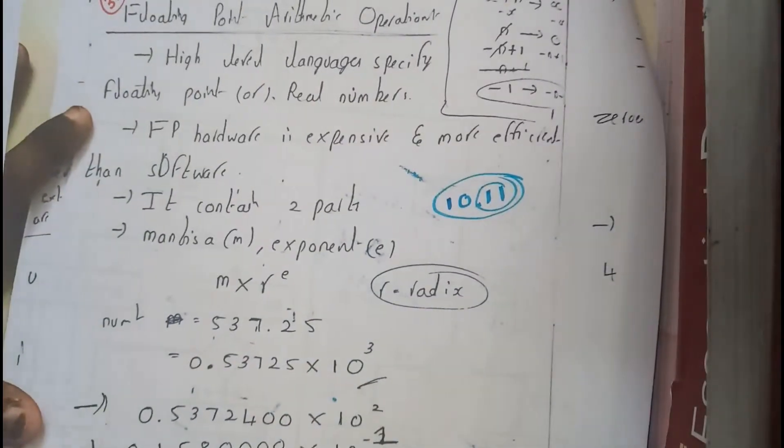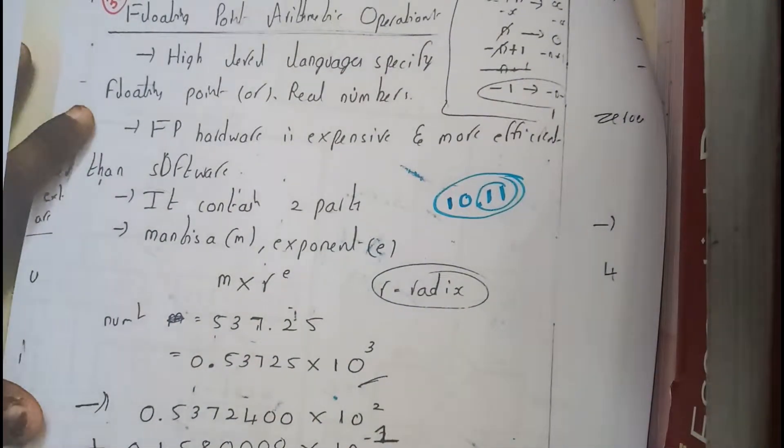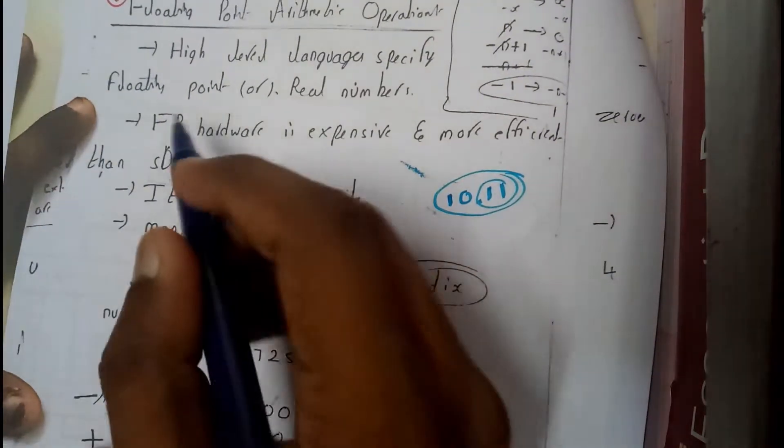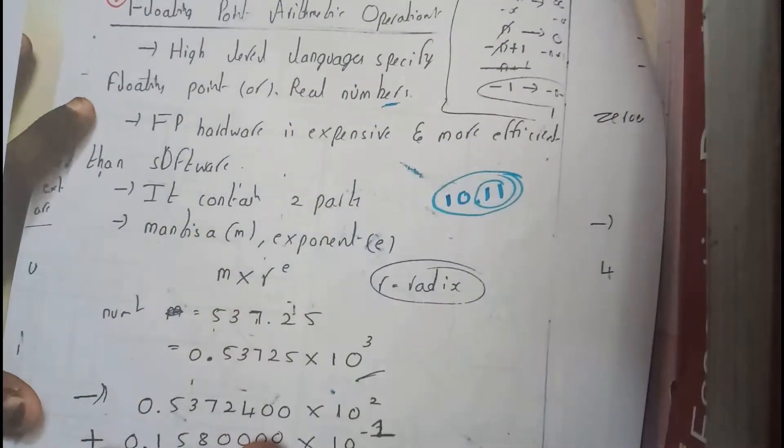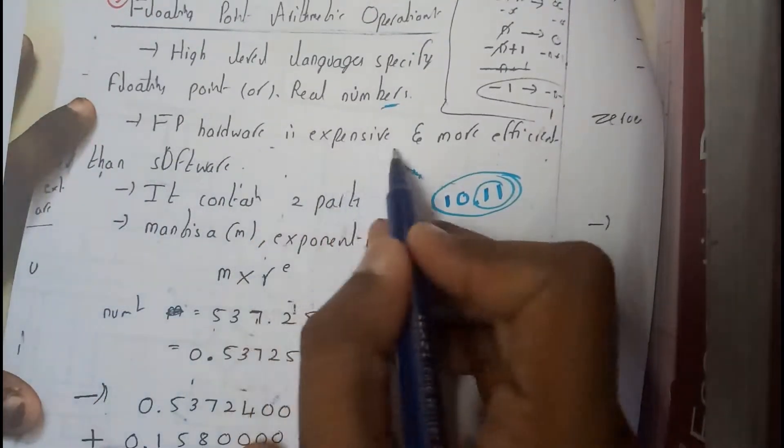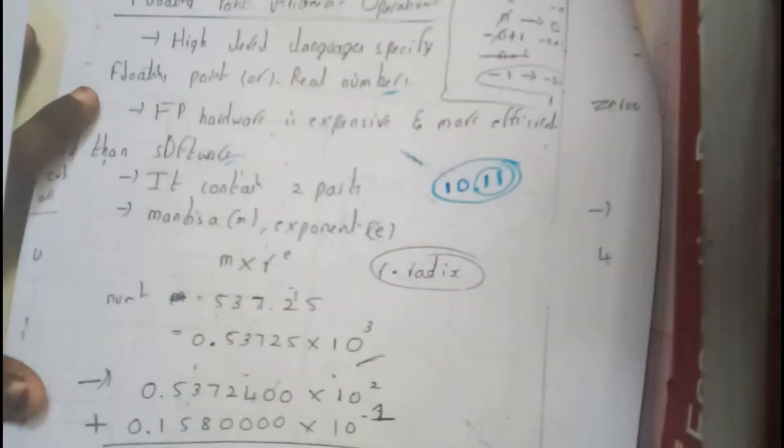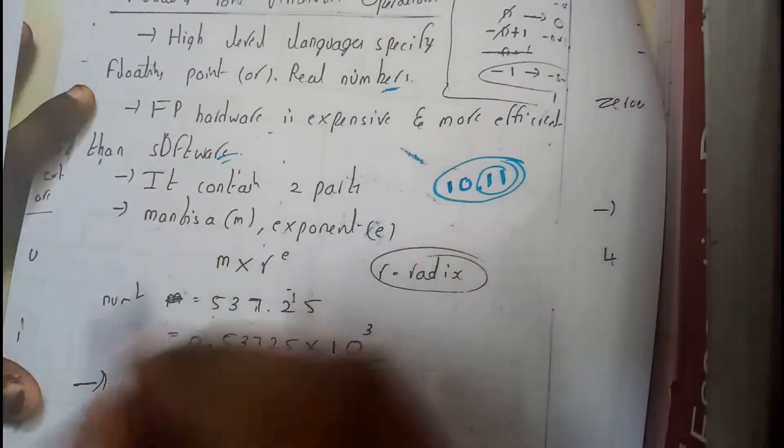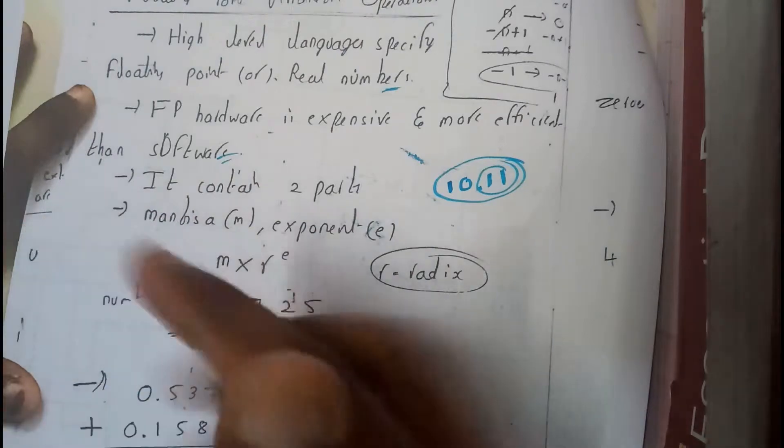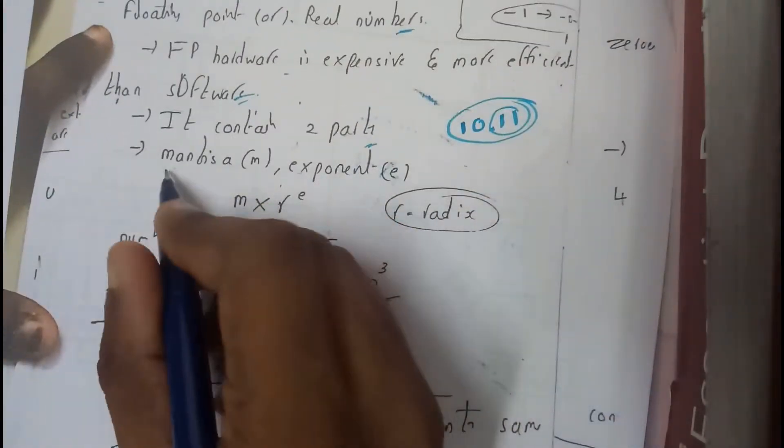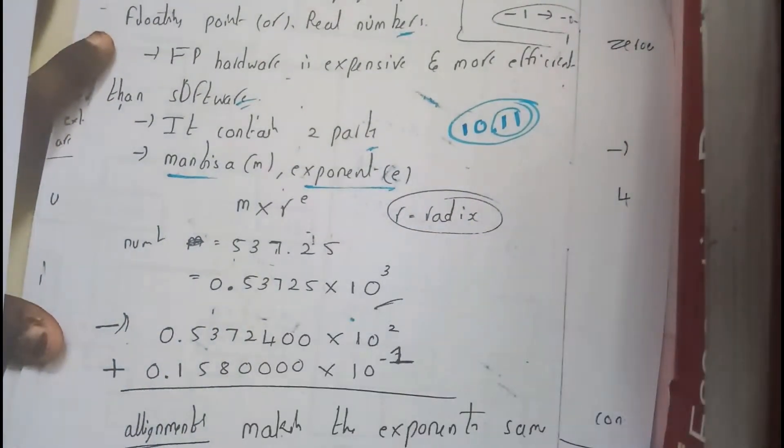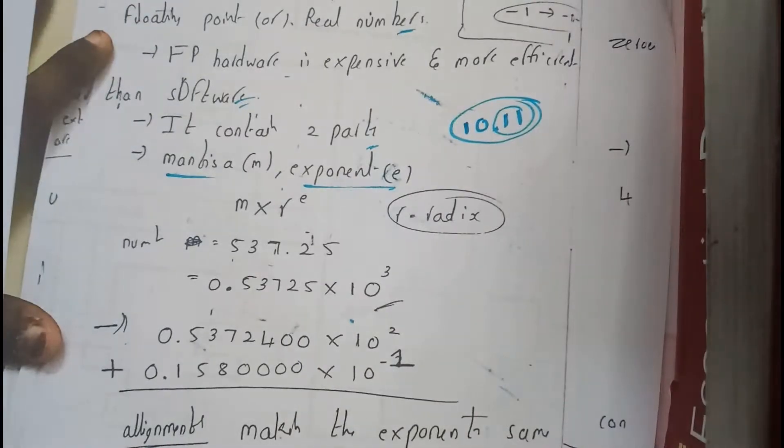High level languages specify floating point and real numbers. Floating point hardware is expensive and more efficient than software. Basically, a floating point has two parts: those are called mantissa and exponent. These are things we have discussed already in the first chapter, including all the operations on these floating points.